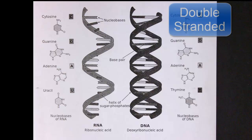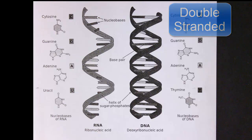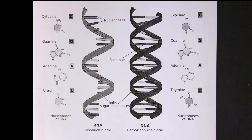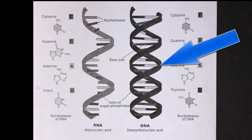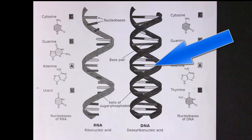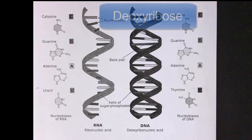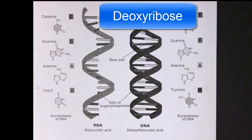DNA is a double-stranded molecule and has two strands running in opposite directions. Each strand consists of a sugar-phosphate backbone with bases coming off of the sugar. The sugar involved is deoxyribose.